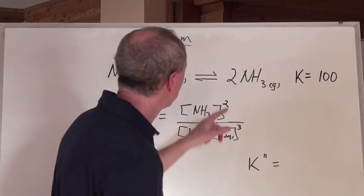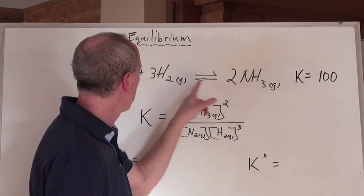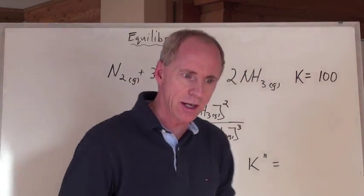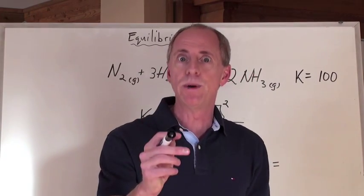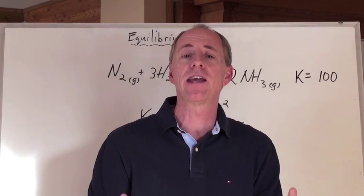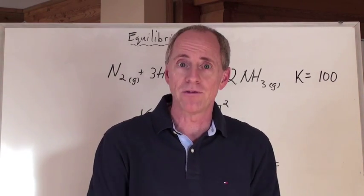Because if you balance this as a molar formation of NH3 by putting a 1 there, and then a 3 halves there, and a 1 half there, you're going to end up with a different number. You bet you are. So here's the thing, it is entirely important to be able to have a standard way to be able to arrive at K.